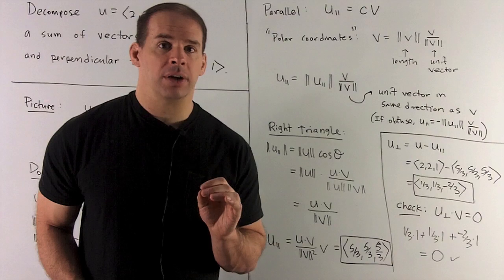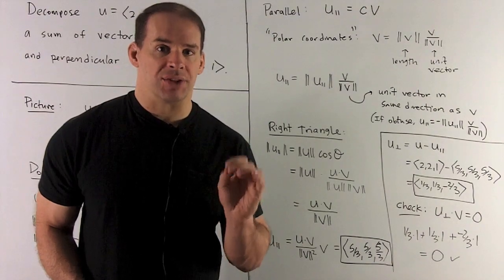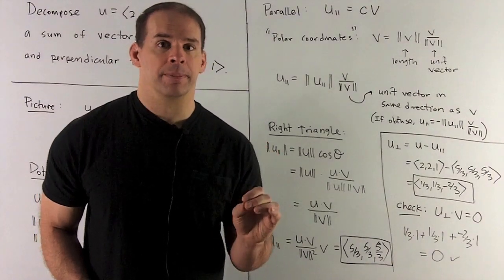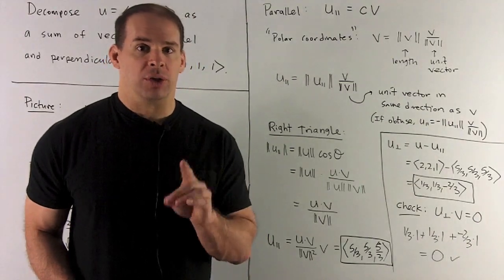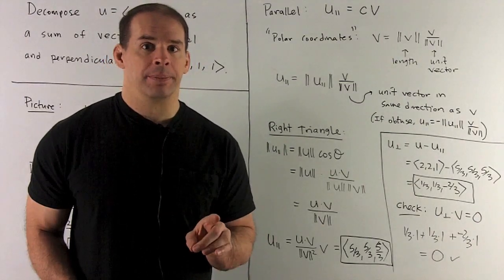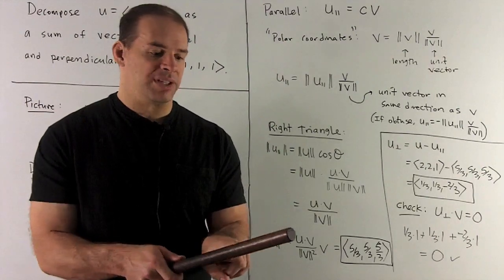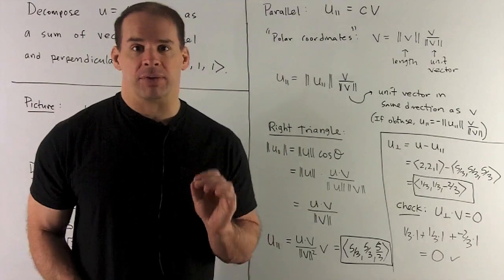To get our parallel vector, think of u parallel as a scalar multiple of v. If that scalar multiple is positive, then we have an acute angle between u and v. U parallel and v point in the same direction, but they may have different lengths.